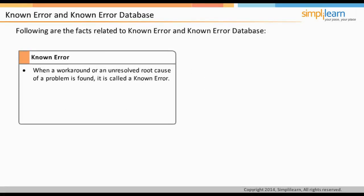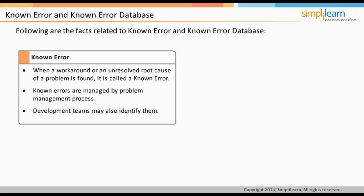Once we have a problem on our hands, based on the priority, effort is spent to find out the root cause of an issue. A temporary fix or workaround might be used to restore services to a usable level in the meantime. The moment a workaround or a root cause to the problem is found, it is called a known error. The IT services are aware of the issue. Known errors are managed throughout their lifecycle by the problem management process. Development teams or suppliers may also identify known errors — for example, application incompatibility reports for Windows by Microsoft.